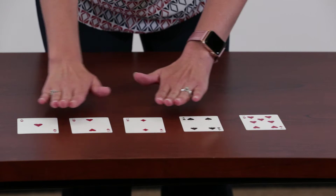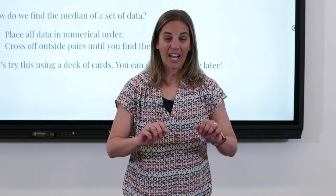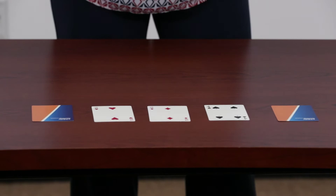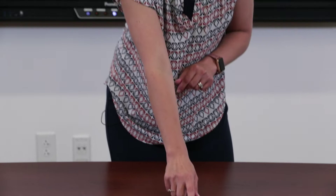My next step is to cross off outside pairs. What I really like about using cards is that I can flip them over and the numbers are no longer visible. I'm going to start with my two outside pairs — the farthest numbers from each other — and flip them over. Then I'm going to come to the next outside pair and flip those too. What number is left in the middle? My 2. So this is my median for this set of data.